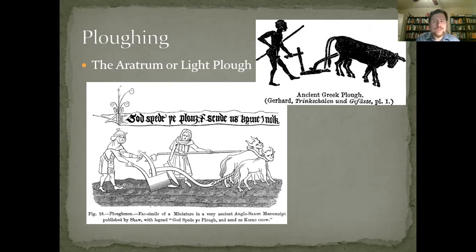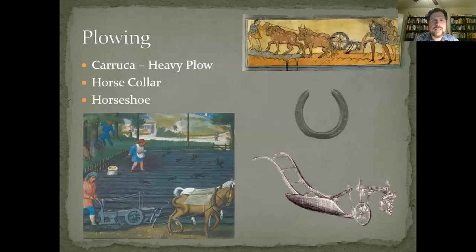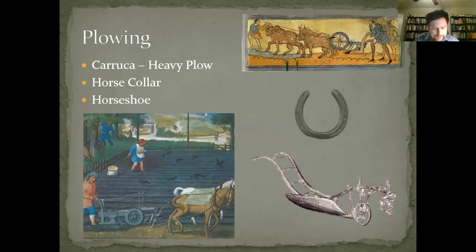The aratrum is a perfectly serviceable way to plow a field, but it works much better in the Mediterranean than in northern Europe. The soils in northern Europe are much heavier — more clay — so a light plow doesn't do the best job of turning up the soil. The solution is a heavy plow, and that's exactly what we see in the high middle ages: what we call the carruca. The carruca is made from iron and typically has wheels to speed the plow through the field. Because it is heavier, it breaks up the heavier northern European soils much better.